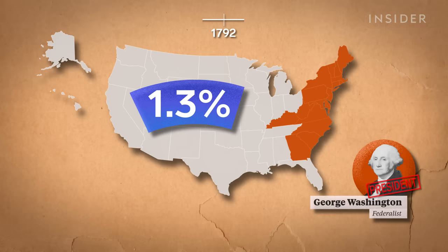Thirteen years after the signing of the Declaration of Independence, George Washington is elected the first president of the Union in 1789. He easily wins a second term. But only about 1.3% of the country's population casts a ballot. In most states, only white men who own property can vote, with some exceptions. Pennsylvania, Maryland, New Hampshire, Massachusetts, and Vermont all allowed free people of color to vote on exactly the same basis as their white neighbors and without property requirements.